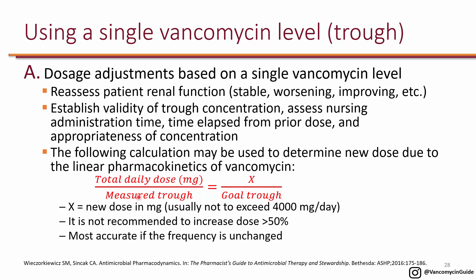Assuming the measured trough was not at goal — because if it was at goal, you shouldn't change the dose — but if it was not at the target trough, you need to adjust the dose. Put the goal trough here and solve for X, which gives you the new total daily dose. You can use this equation for either sub-therapeutic or supra-therapeutic levels: if sub-therapeutic, increase the daily dose; if supra-therapeutic, decrease it.